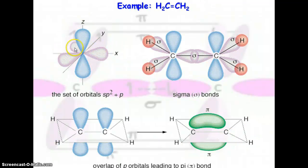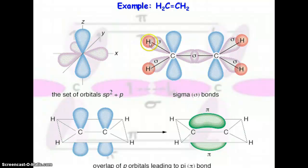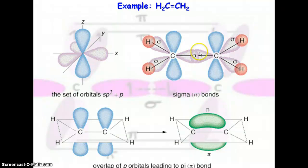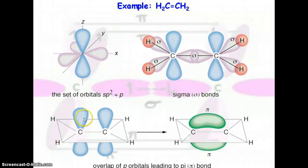Here's a picture: the sp2 hybridized orbitals are shown in pink, and then we have the blue p orbitals up and down. In the C2H4 molecule, the pink sp2 hybridized orbitals sigma bond with the hydrogens on each side of the carbon. There is also a sigma bond between sp2 orbitals from each of the carbon atoms. The p orbital that was not hybridized on both carbons is where pi bonding occurs. Those two unhybridized p orbitals combine to form the pi bond.